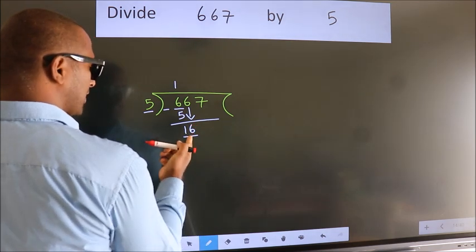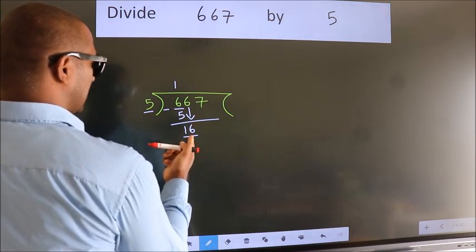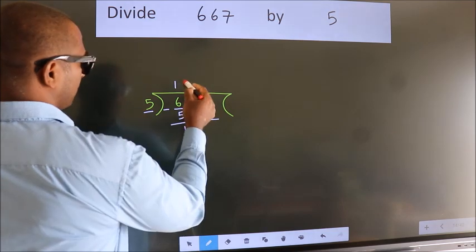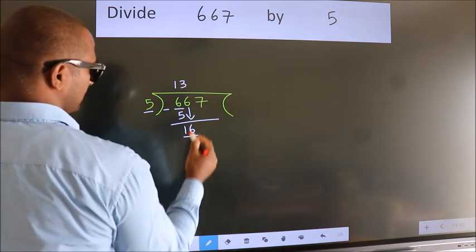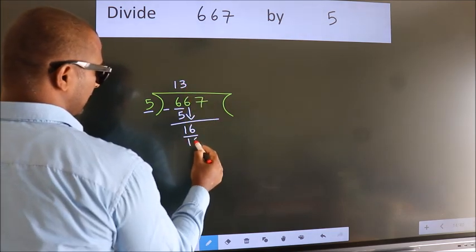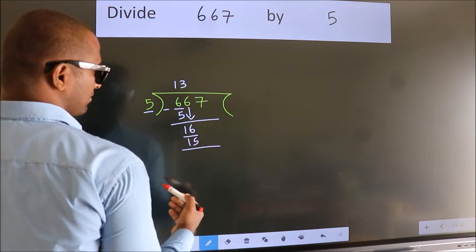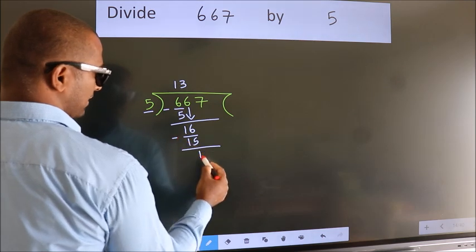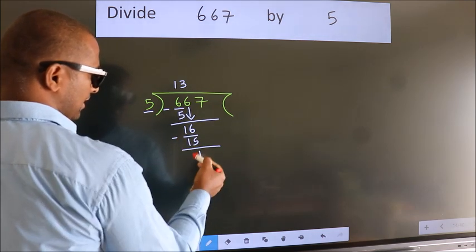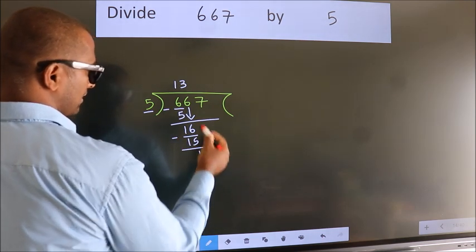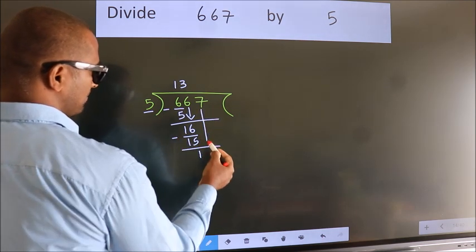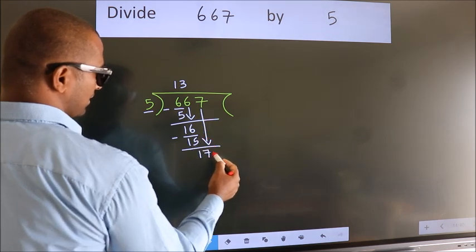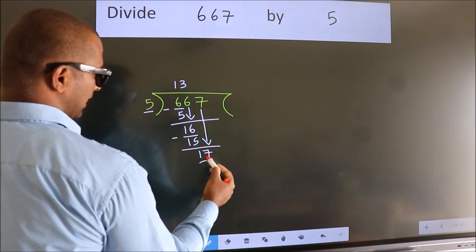A number close to 16 in the 5 times table is 5 threes 15. Now we subtract. We get 1. After this, bring down the beside number. So 7 down. So 17.